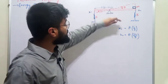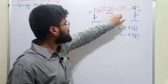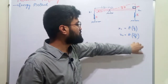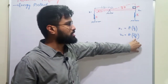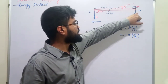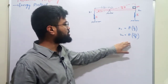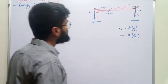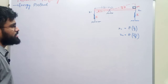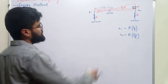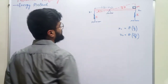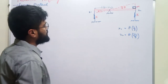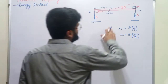Because the total length of the rod is L, this part will be L minus L/3, which gives 2L/3. So the deflection x2 will be equal to theta times 2L/3, where theta is the angular displacement of the rod at any time t.